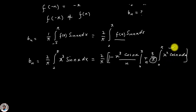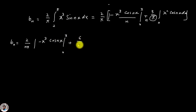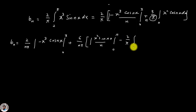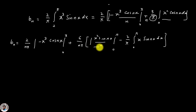Applying integration by parts again, bₙ = (2/nπ) [-x³ cos(nx)]₀^π + (6/nπ) [x² sin(nx)/n]₀^π minus (2/π) ∫₀^π x sin(nx) dx. Multiplying (2/π) through the 3/n term gives 6/(nπ), and applying the chain rule yields these two resulting values.